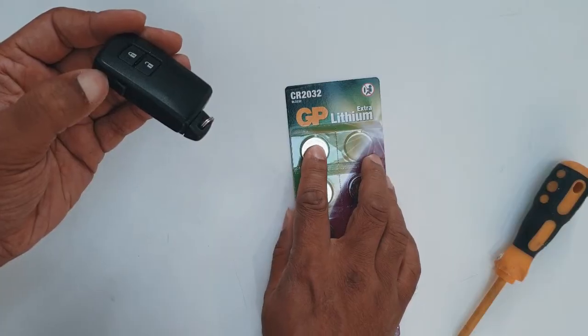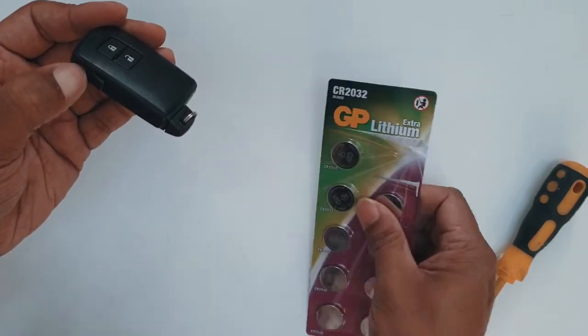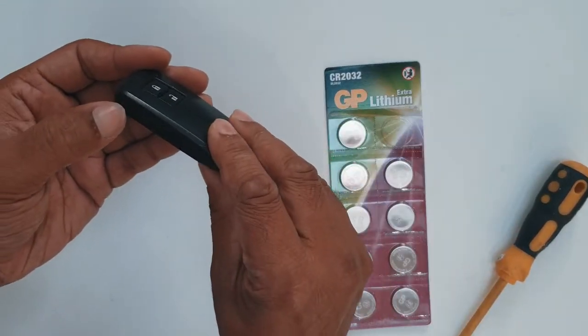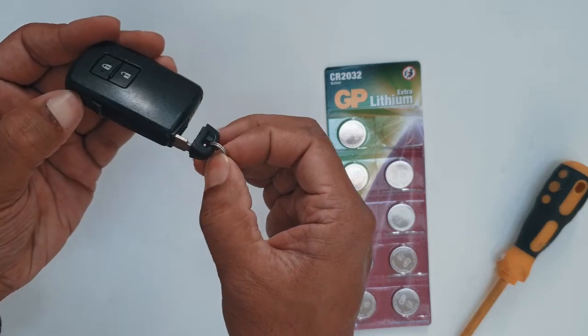The key fobs take CR2032 3-volt batteries. As you can see, I bought those from Amazon. It's quite simple. Just take the key out first, which I've done.